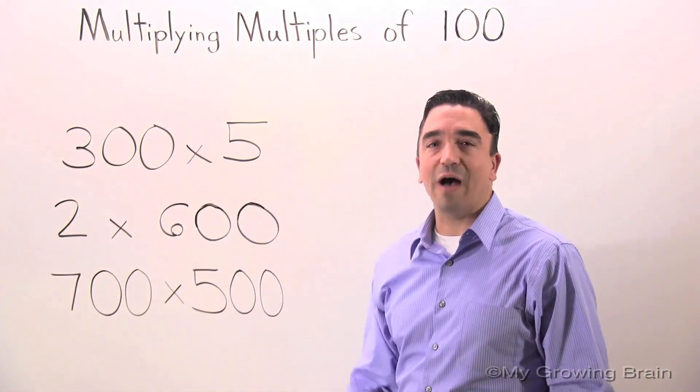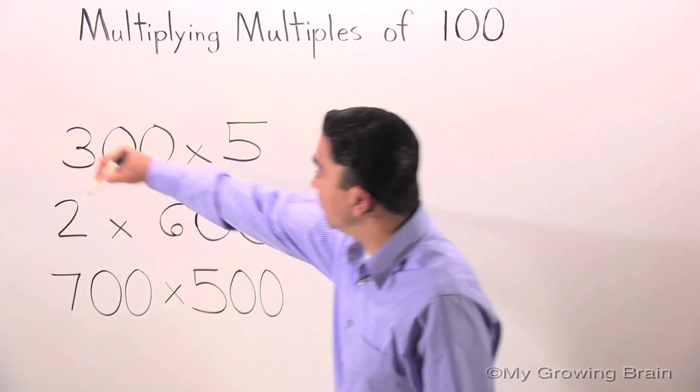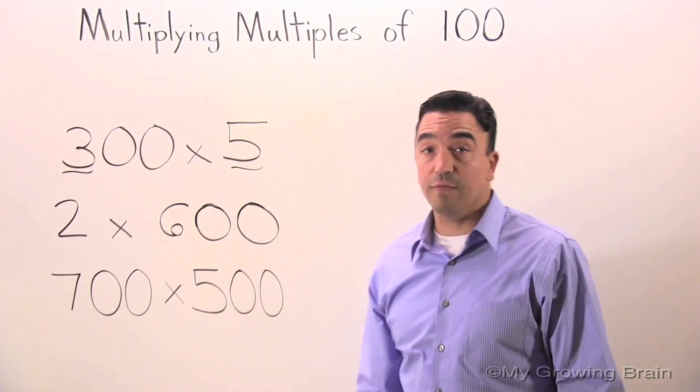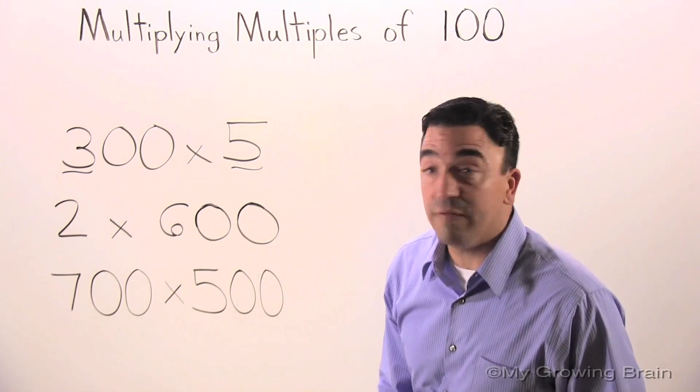300 times 5. The first thing I'm going to do is multiply 3 times 5, which is equal to 15.